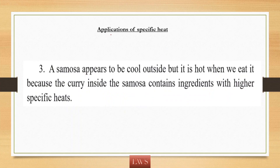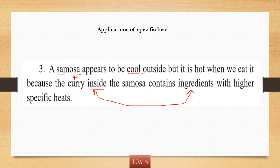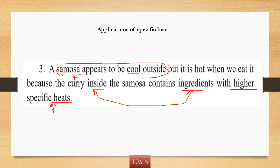This is the last application of specific HEAT. While eating a samosa, when you touch it, it might feel cool from outside. But inside, whichever curry is there inside the samosa, that will be hot. Why is it hot inside? Because that curry is prepared using ingredients — vegetables, corn, onions, etc. — that may contain water or other ingredients with high specific HEAT. If it has high specific HEAT, it shows reluctance to decrease its temperature, so it won't cool faster. That is why, even though the outer shell of the samosa is cool, the inside curry is still hot.